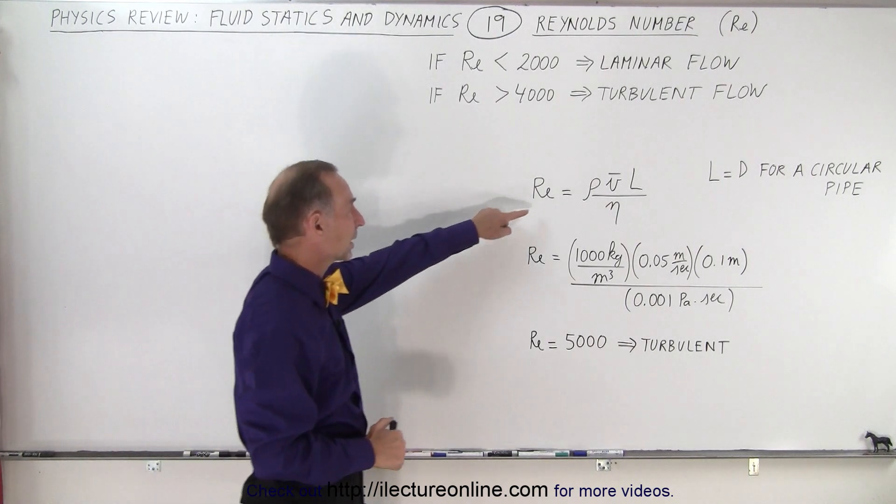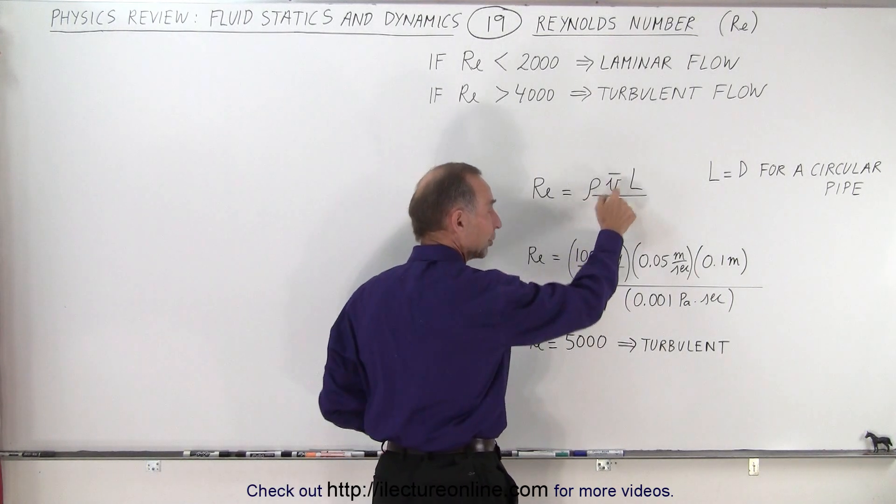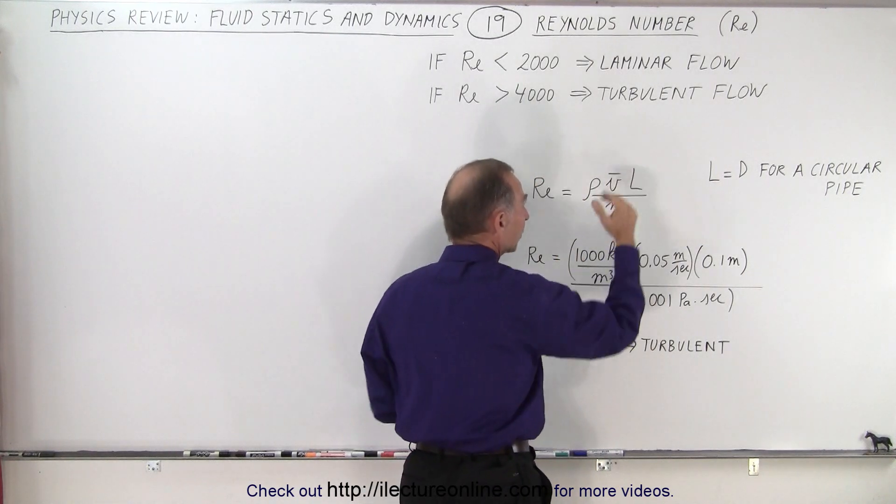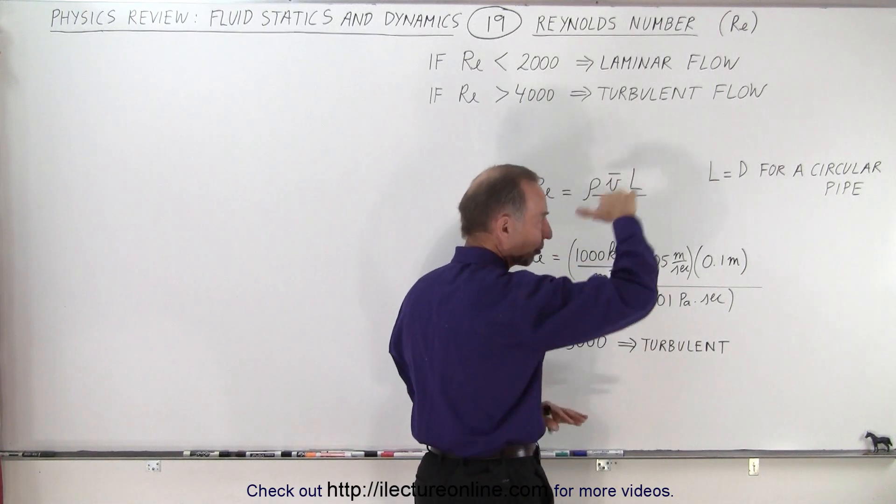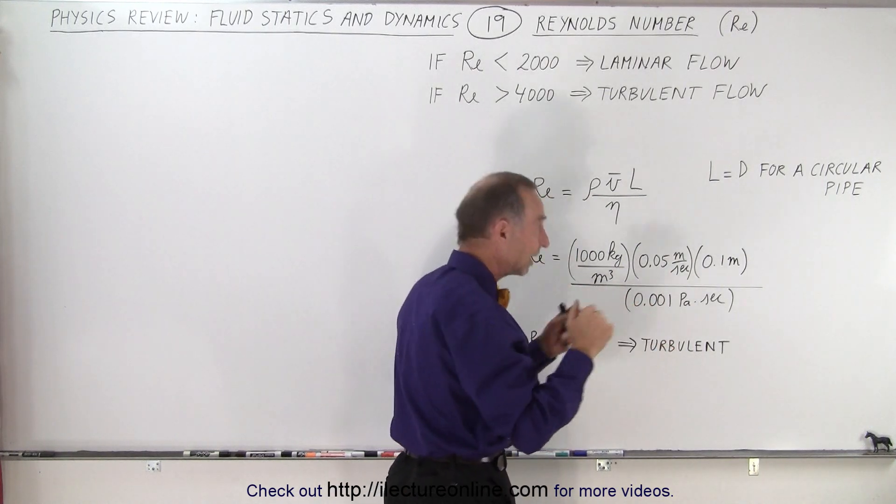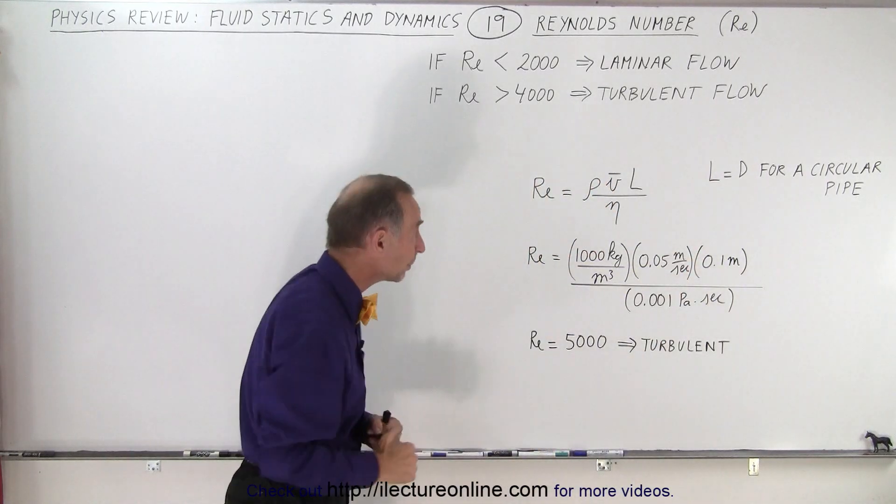The Reynolds number can be calculated like this, where this is the density of the fluid, the average velocity of the fluid (because it's going to change inside the pipe). L here represents the distance over which the fluid travels from one end to the other end of whatever contains the fluid. So for a circular pipe, it ends up being the diameter of the pipe.